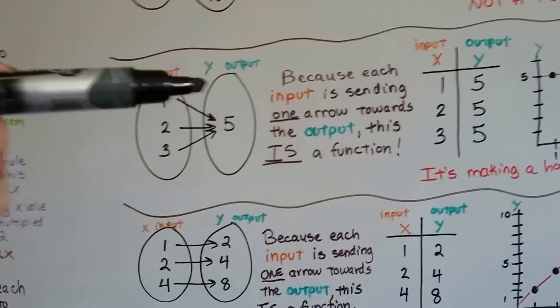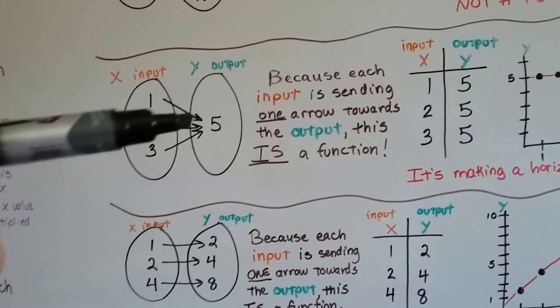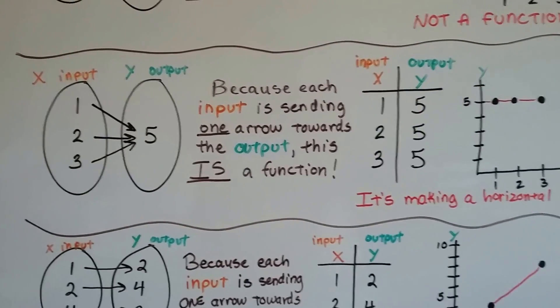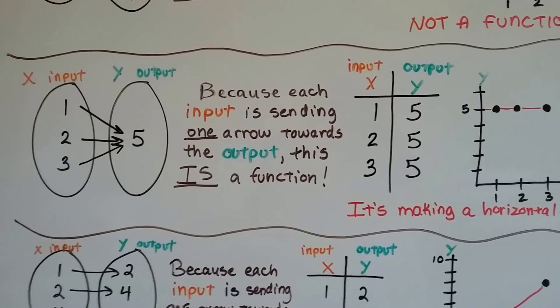Yes. They may be sending it all to the same number in the output, but they're each sending one, aren't they? So because each input is sending one arrow towards the output, this is a function.